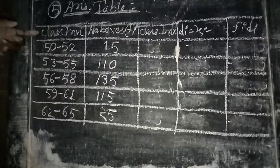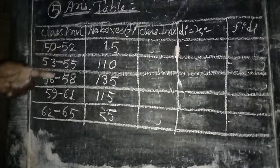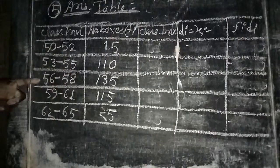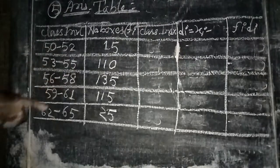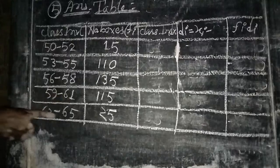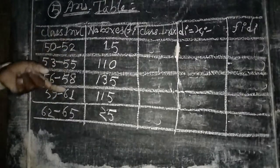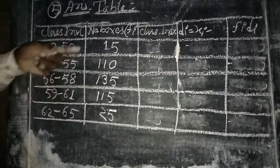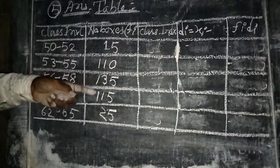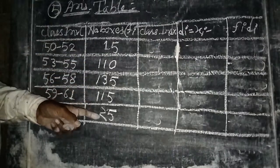For question five, the answer table using the assumed mean method has class intervals: 50 to 52, 53 to 55, 56 to 58, 59 to 61, 62 to 64. The number of boxes (frequencies) are: 15, 110, 135, 115, and 25.